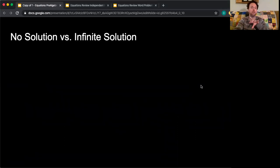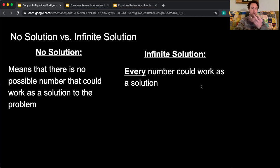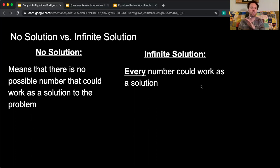The difference really between no solution and infinite solution—no solution obviously means that there is no possible number that could work as a solution for the problem. So if you have an equation that has constants and variables, what no solution means is that no number could be replaced with that variable, that you couldn't replace x with anything and make it work.